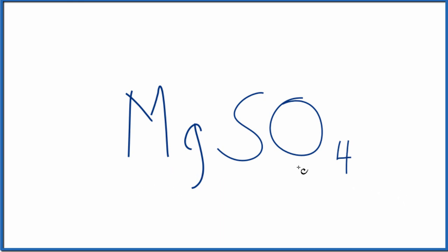So first off, we know that magnesium, that's a metal. And then sulfur and oxygen, these are nonmetals. So metal and nonmetals, we have an ionic compound.